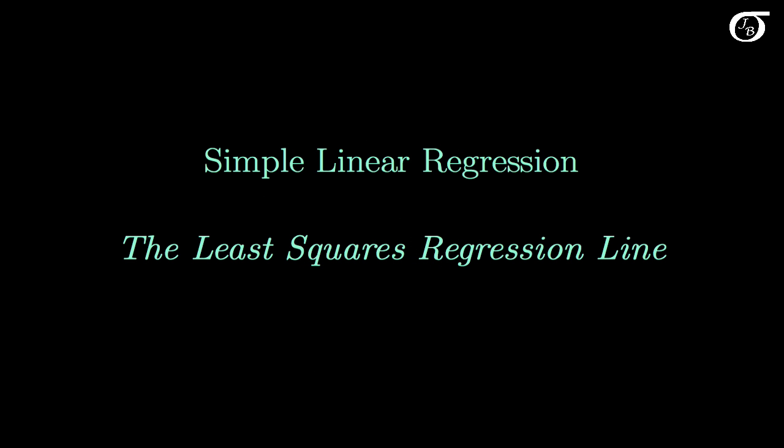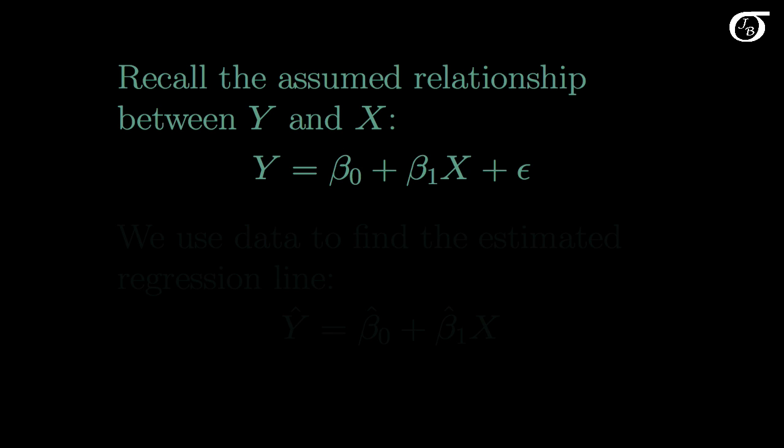Let's take a look at the least squares regression line in simple linear regression. Recall the assumed relationship between Y and X, that Y is equal to beta0 plus beta1 times X plus epsilon.